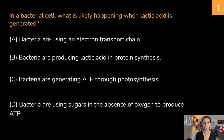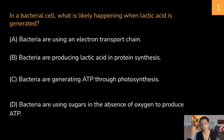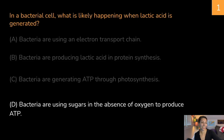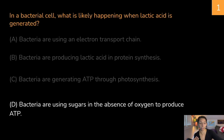Practice question two: In a bacterial cell, what is likely happening when lactic acid is generated? A) bacteria are using an electron transport chain, B) bacteria are producing lactic acid in protein synthesis, C) bacteria are generating ATP through photosynthesis, or D) bacteria are using sugars in the absence of oxygen to produce ATP. The correct answer is D — bacteria are using sugars in the absence of oxygen to produce ATP, which provides energy for the cell.